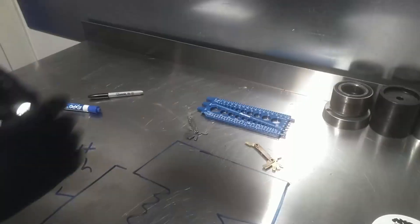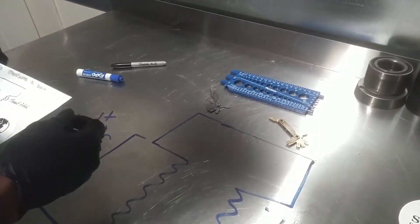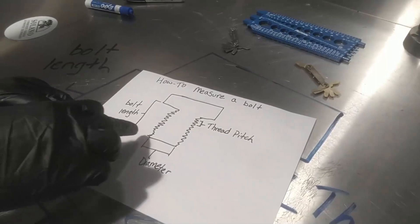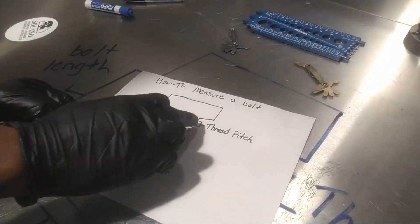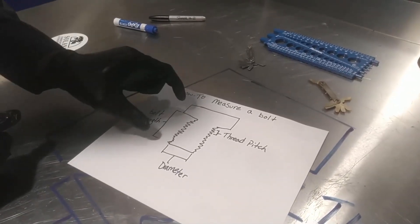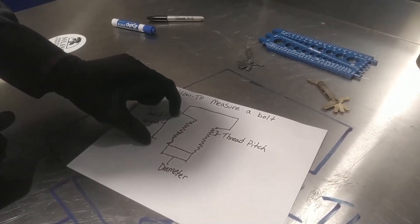When you measure a bolt, there's three main measurements that you need to know. Right here you've got your diameter of the bolt, then you have your thread pitch, and you have the length of the bolt. Notice we do not include the head of the bolt in the length when we're just checking for threads.